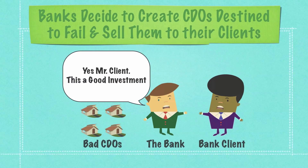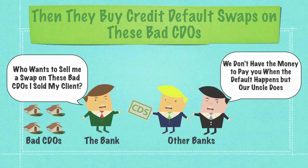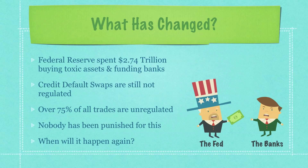Then the banks got really creative. They actually started pulling together CDOs that were designed to fail. They went to their clients and said, oh yeah, this CDO is really good, you should buy it. They then turned around and went to other banks and said, I want to buy credit default swaps that will pay out whenever these bad CDOs that I sold my clients fail. The bankers they bought these credit default swaps from did not have the principal to pay out whenever these CDOs collapsed, but they didn't care because they expected the United States government to step in. The Federal Reserve spent $2.74 trillion buying toxic assets and funding the banks after the collapse. Unregulated credit default swaps are still not regulated in the United States. Over 75% of all trades on Wall Street are not regulated, and no one has been punished for this whole entire mess.